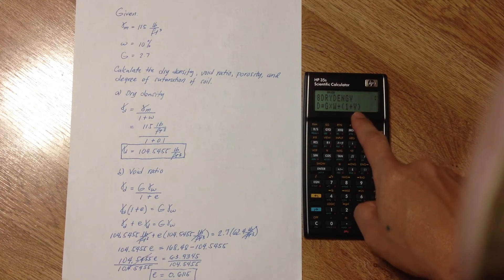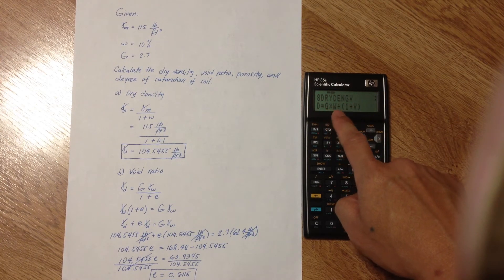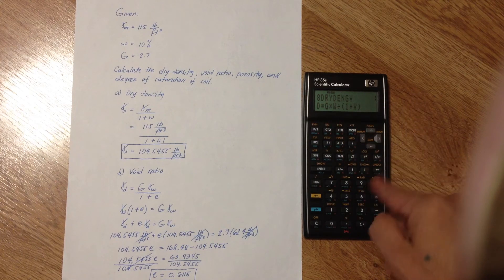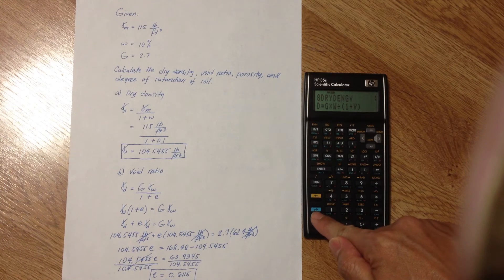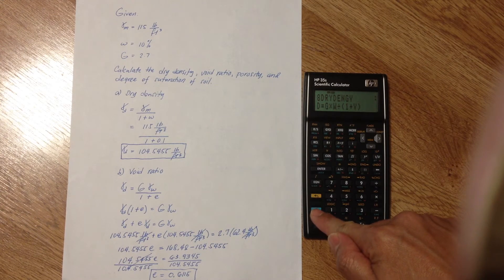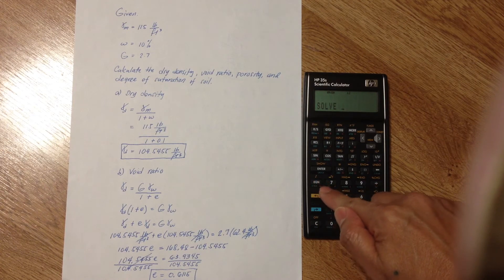So, we need the void ratio, but this is a dry density equation. What we need to do is use the solve function. By doing that, we press the blue arrow, and then solve function, or solve button.